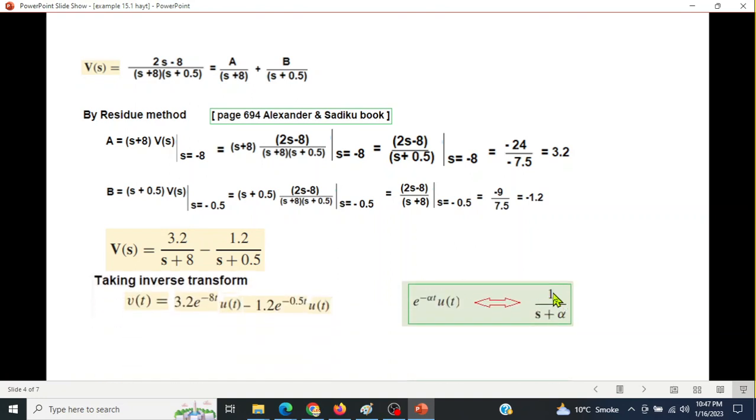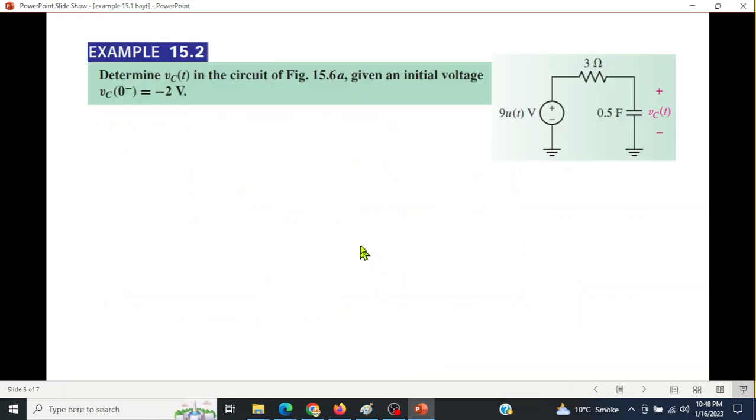Going back into time domain, the answer will be 3.2e^(-8t)u(t) - 1.2e^(-0.5t)u(t). In compact form taking u(t) common, this is the final answer. That was example 15.1.